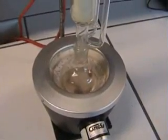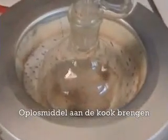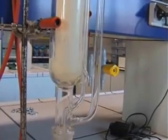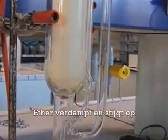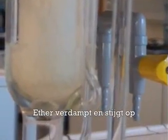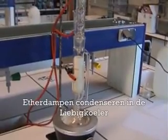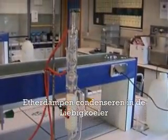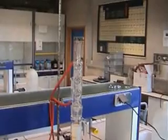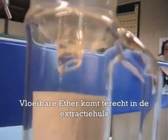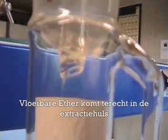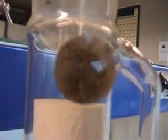Allereerst brengen we het oplosmiddel aan de kook met behulp van de warmtemantel. De vloeibare ether verdampt en stijgt in de wijde buis rechts richting de liebigkoeler. De etherdampen condenseren in de liebigkoeler. Het vloeibare ether komt vervolgens terecht in de extractiehuls, waar dat zich ook de pindanootjes bevinden.